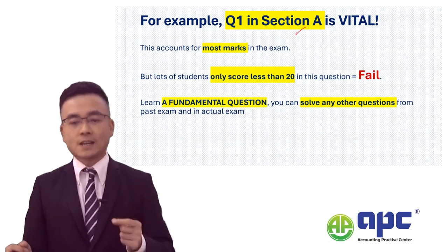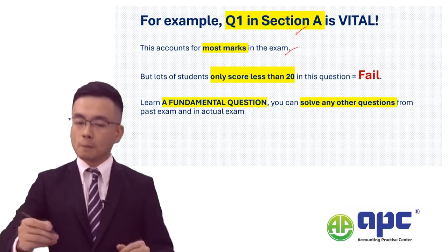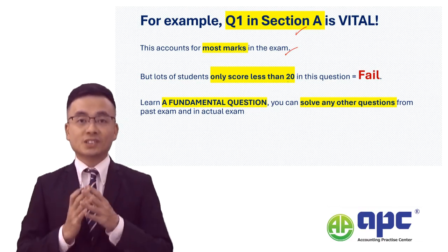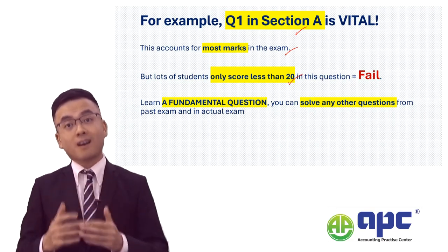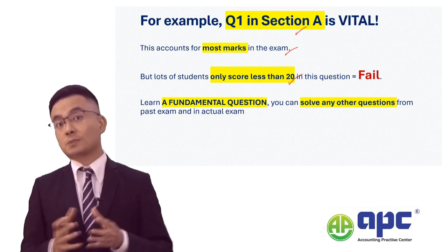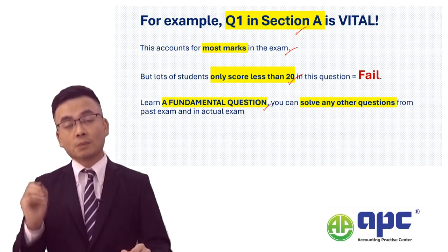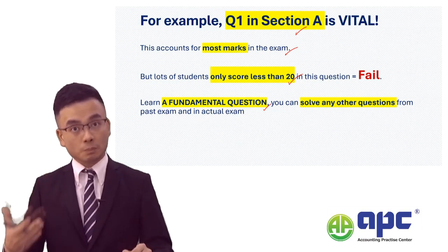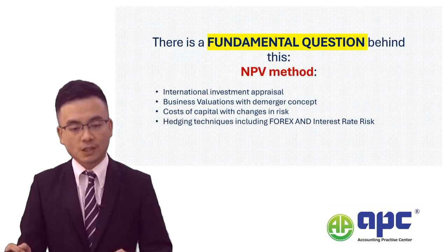For example, in the ACCA AFM exam, Section A Question 1 accounts for 50 marks — most of the marks in this paper. However, a lot of students will simply score less than 20. Quite a lot of them fail this paper because the global pass rate for this paper is not particularly high. If you use my fundamental questions approach, you can study the fundamental question and apply the principles to other questions, so you can solve any other questions very easily.